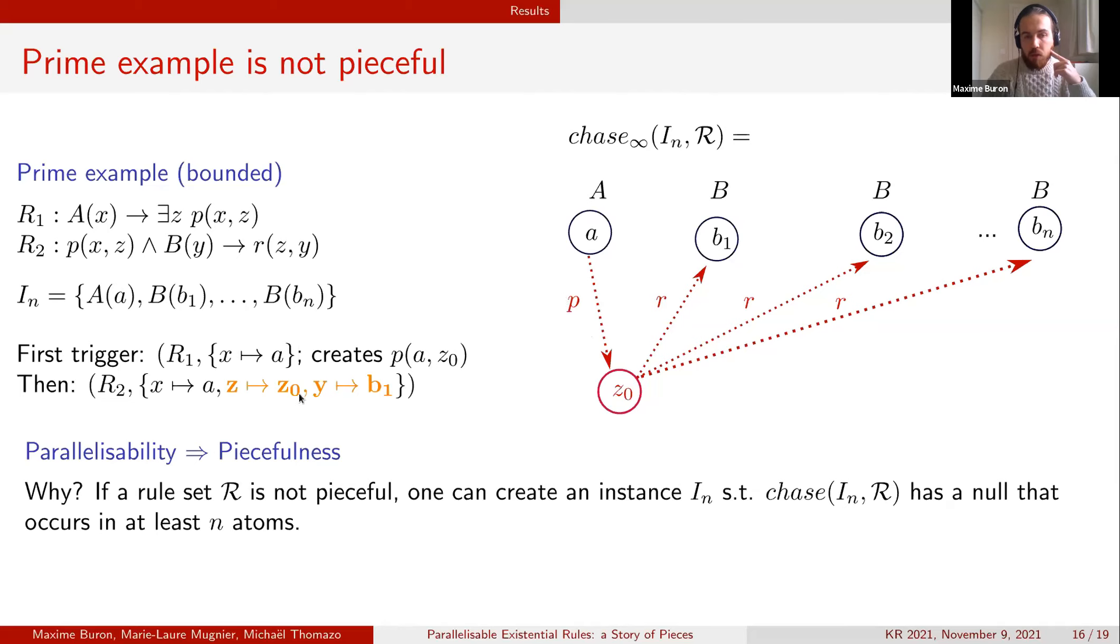We will map z to z0 and y to b1 and at this point they belong to two different pieces.